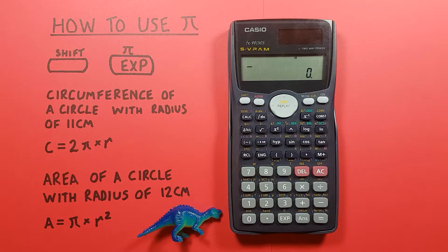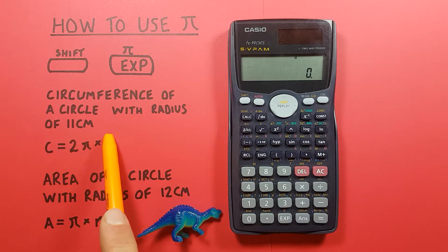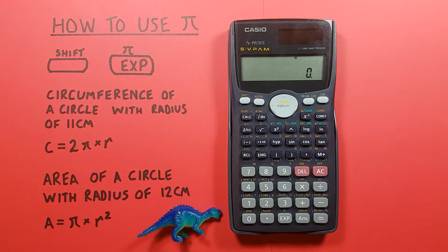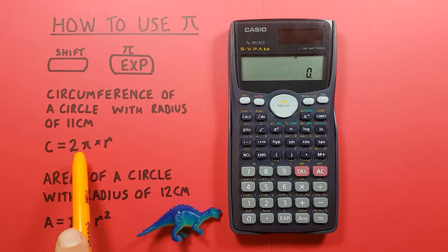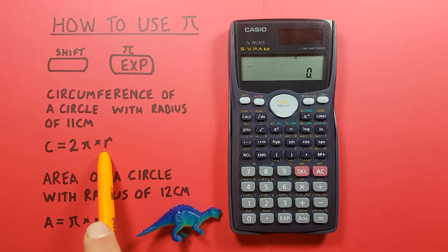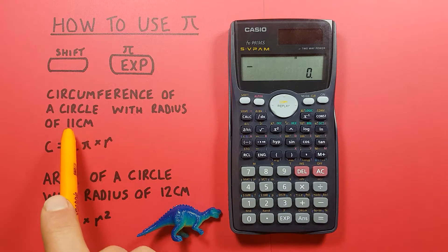An example of how we can use this is to determine the circumference of a circle. Let's say the circumference of a circle with a radius of 11 centimeters. Well we know that circumference is equal to 2 times PI times R and then we know our R is radius of 11 centimeters.